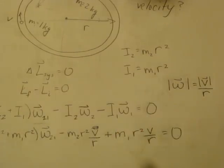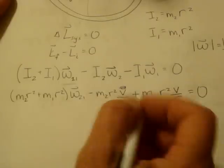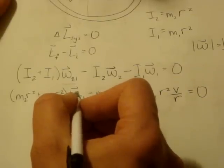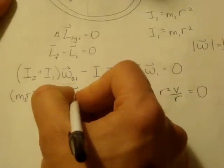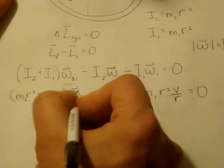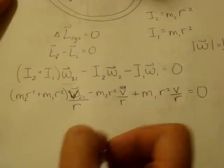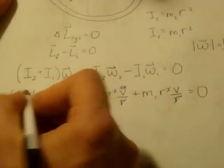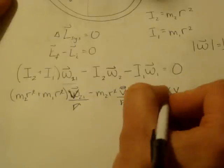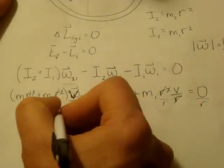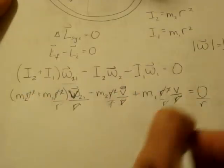We substitute m2 = 2 kg and m1 = 1 kg, and note that the final velocity can be written as v₂₁/r. We have an r² in the moment of inertia and an r in the denominator from ω = v/r, leaving one r per term. Since every term has a factor of r and the right-hand side is zero, we can divide through by r, canceling all the r's.